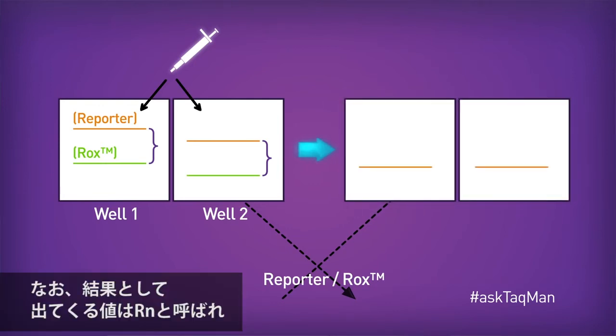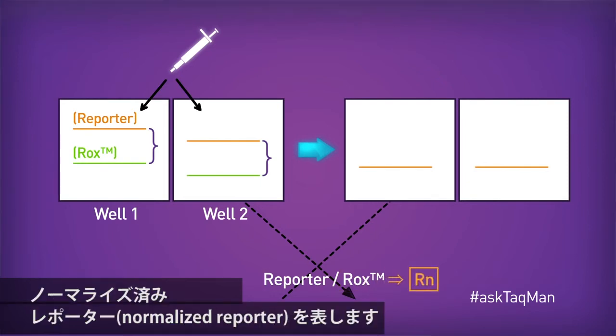The instrument will collect these paired measurements in every well at every cycle, and then divide every reporter measurement by its corresponding ROX measurement at the end of the run. As a result, the precision of our data goes way up. The value that results is called Rn, which stands for normalized reporter.